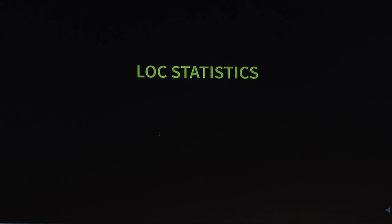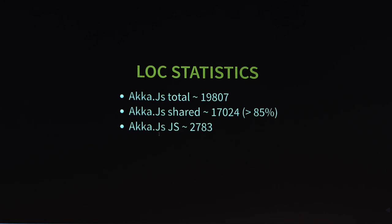Looking at code line statistics: in Akka.js we have a total of about 20,000 lines of code running in the library. Of those, 70% are shared with the Akka master today. We have Akka as a Git submodule and we symlink the files we want to reuse in Akka.js. We have just 3,000 lines of glue code that make Akka run on the JavaScript virtual machines — a really high percentage of reuse.